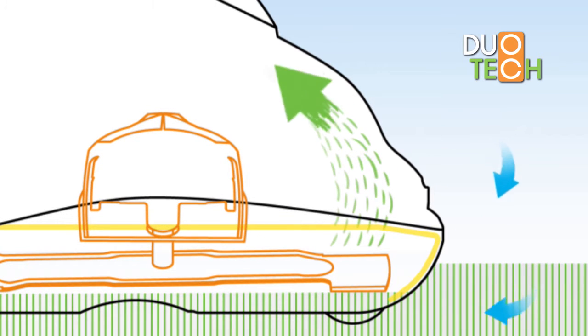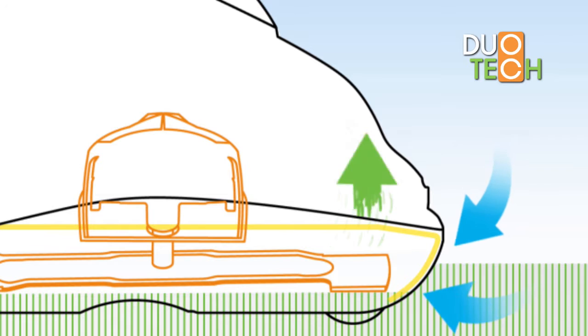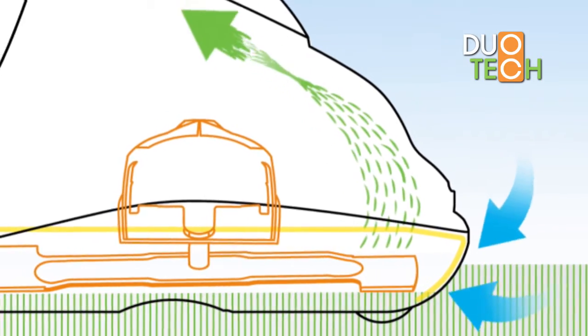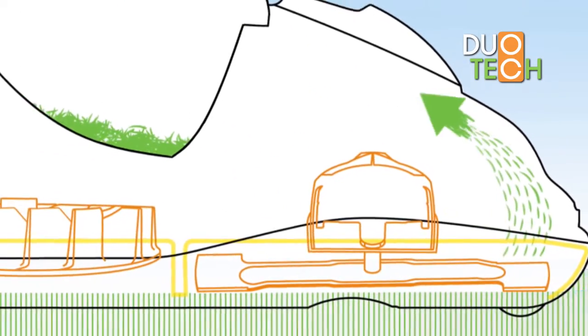This means there is no need for the grass cuttings to drop first and then be collected later like with other Hover Mowers. The UltraGlide takes the grass straight up the chute and away into the collection box with a powerful vacuum.